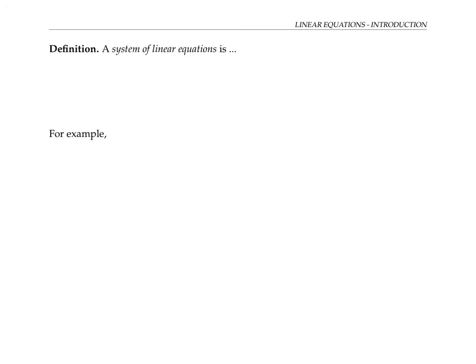A system of linear equations is just a set or collection of linear equations involving the same variables. Here's an example. This example involves four equations and three variables r, s, and t. Notice that not every equation has to contain all the variables.